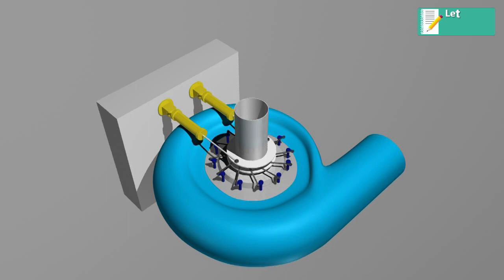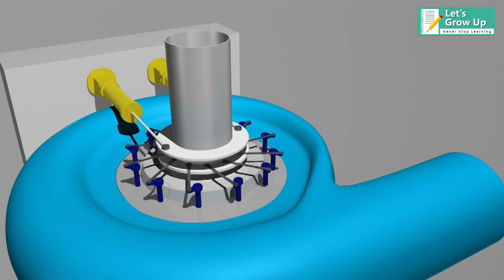Francis Turbine is the first hydraulic turbine with radial inflow. It was developed by James B. Francis in Lowell, Massachusetts.